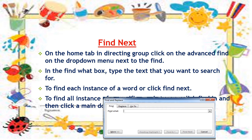In Microsoft Word, we click on the Find function in the Find Word box. Find the text that you want to search for. To find each instance of a word, click Find Next.